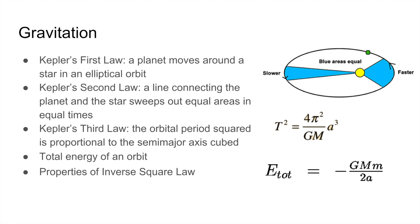Since the gravitational force has r² in the denominator, it follows the inverse square law. There are three key properties: the shell theorem states that if you're inside a uniform spherical shell, the net gravity you feel is zero, while if you're outside, the gravity is the same as if all that mass were concentrated at the center of mass. The other two properties follow from Kepler's first and third laws — the elliptical orbit and the square-cube law.